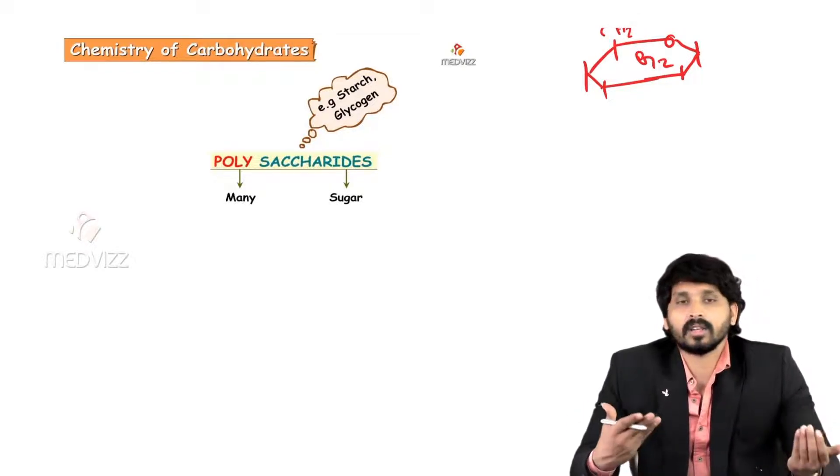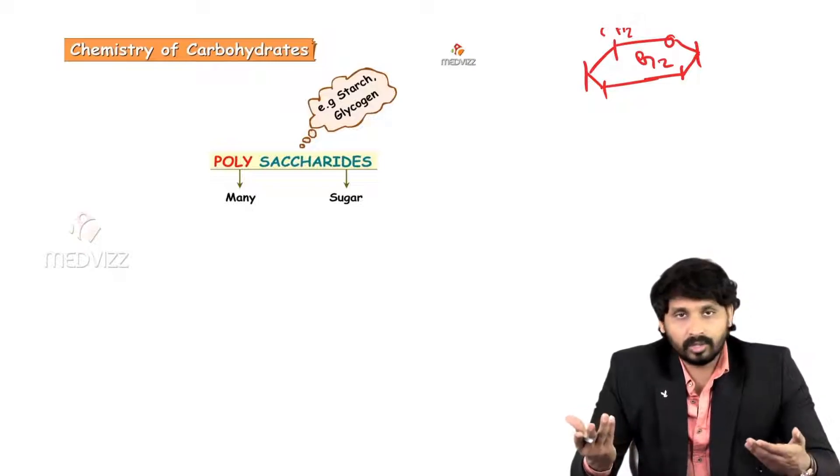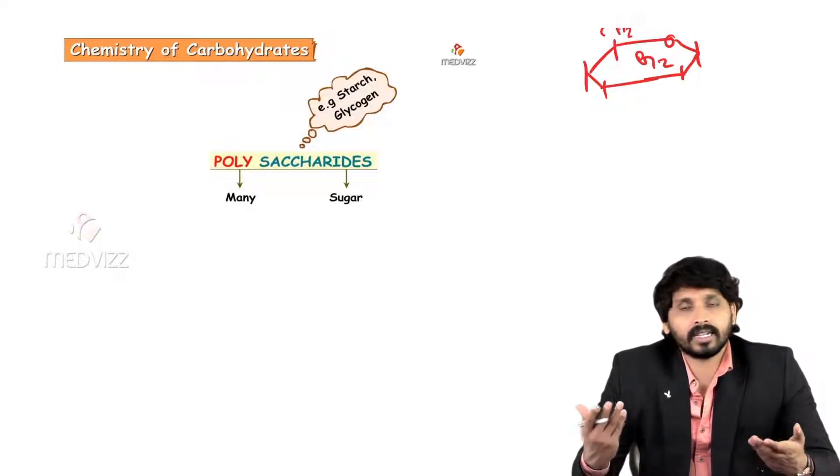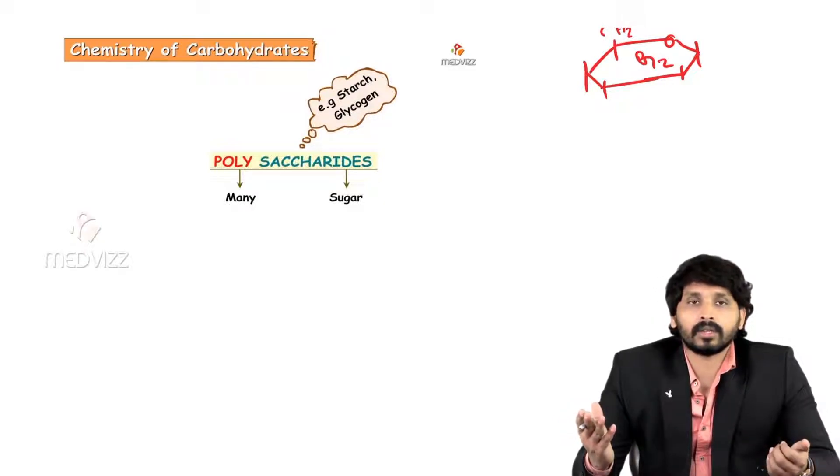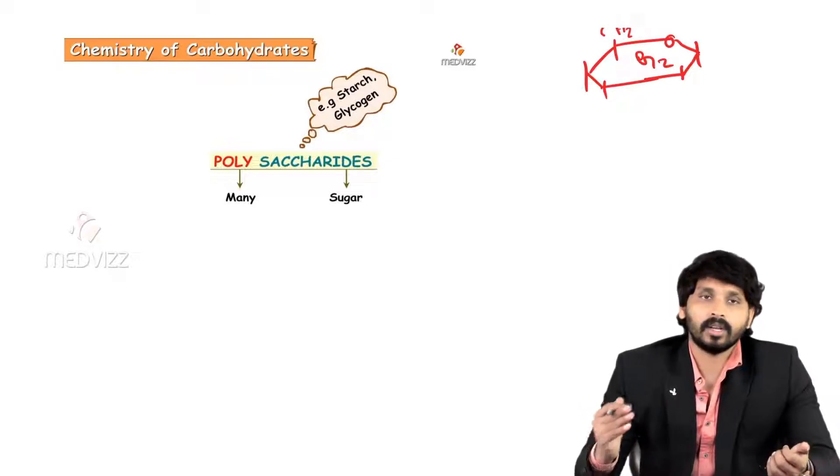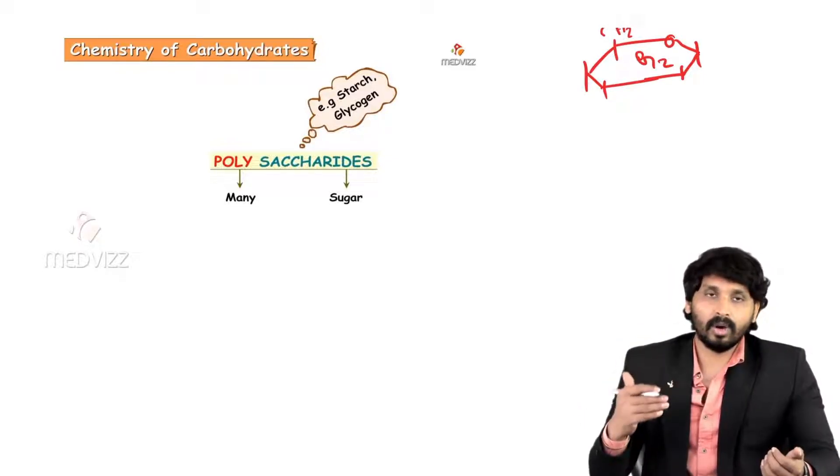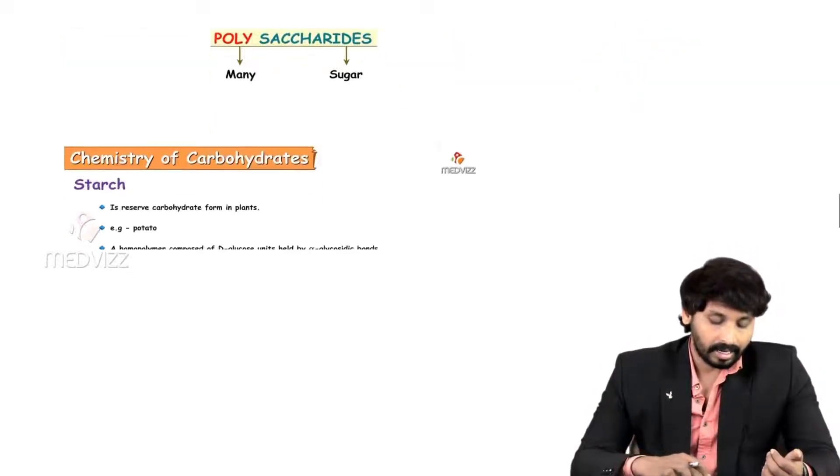Homopolysaccharide examples include starch, glycogen, dextrin, inulin, or cellulose. Heteropolysaccharides examples include hyaluronic acid, chondroitin sulfate, heparin, dermatan sulfate, and keratin sulfate. We will discuss one by one. First, we will discuss about homopolysaccharides.